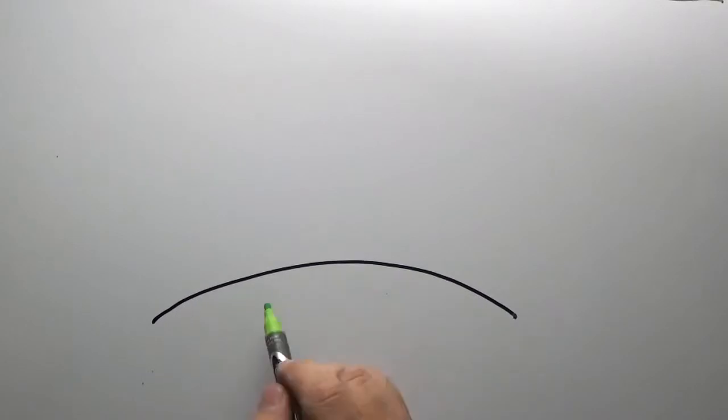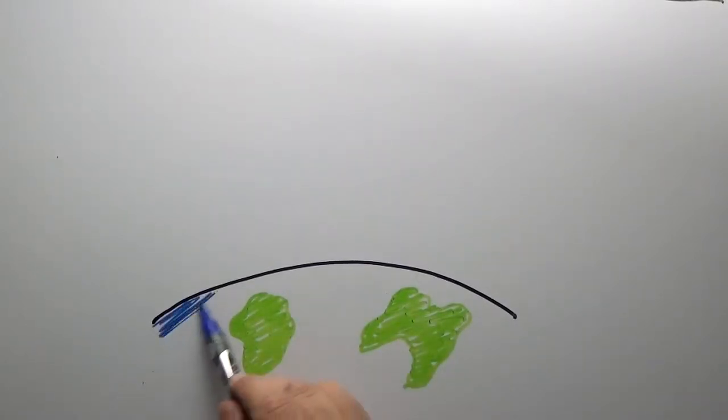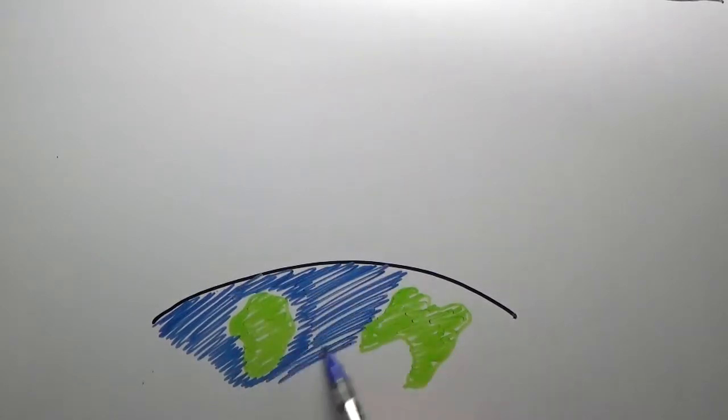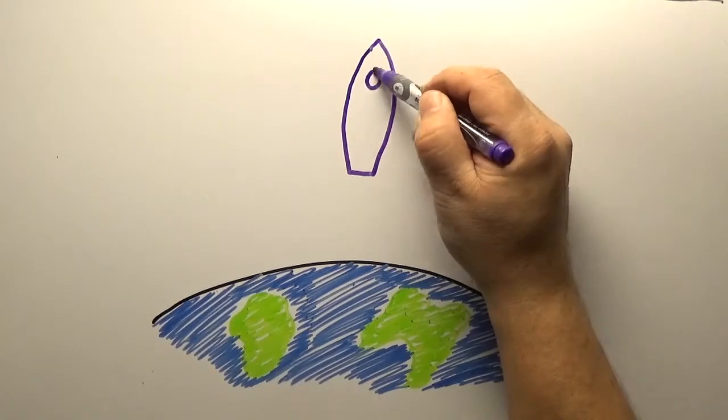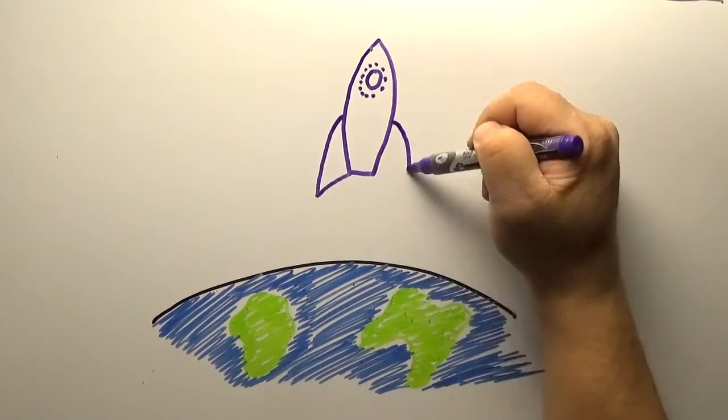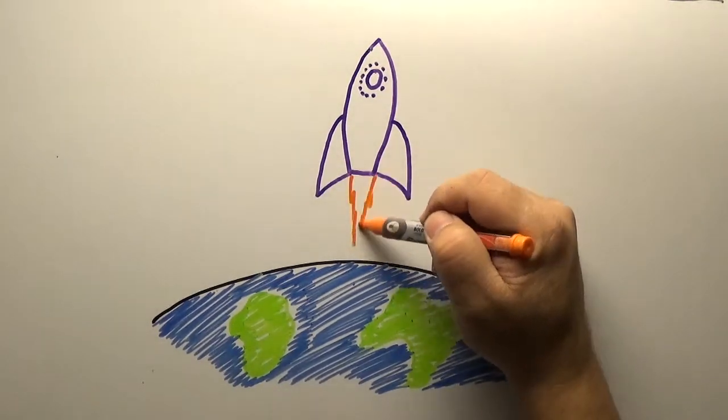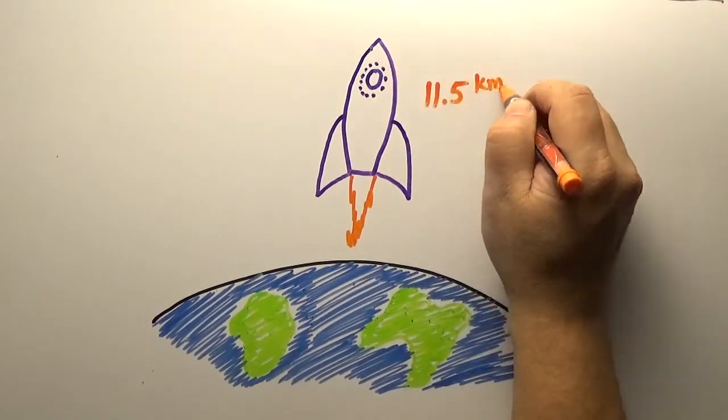How high you can throw a ball depends on the strength of the Earth's gravity. To break away from the pull of gravity, you have to reach escape speed, which for the Earth is about 11 and a half kilometers a second, a speed that so far can only be reached by rocket ships.